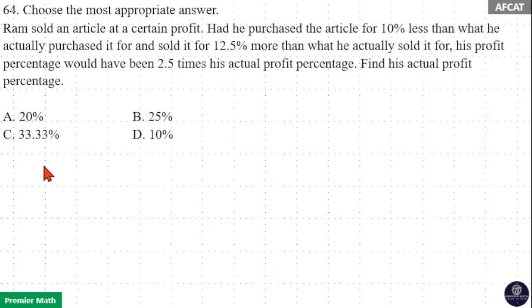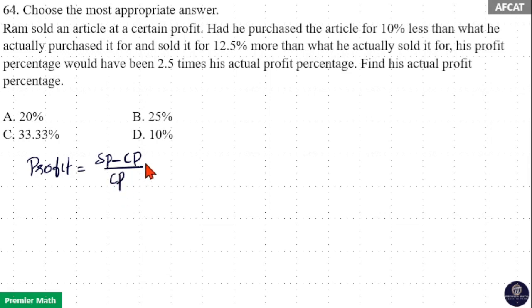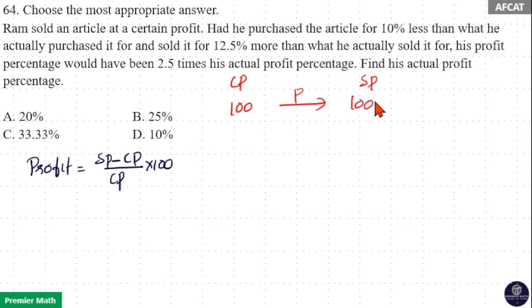Using the formula method: profit equals sell price minus cost price, divided by cost price, into 100. If cost price is 100 rupees and profit is P, then sell price is equal to 100 plus P.